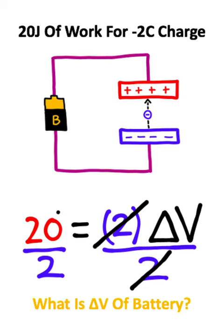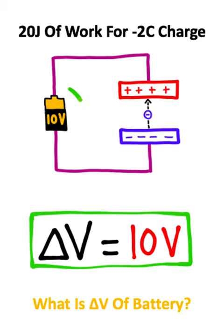I can cancel the 2's on the right side, and we'll have 20 divided by 2, which is 10. So we are dealing with a 10 volt battery.